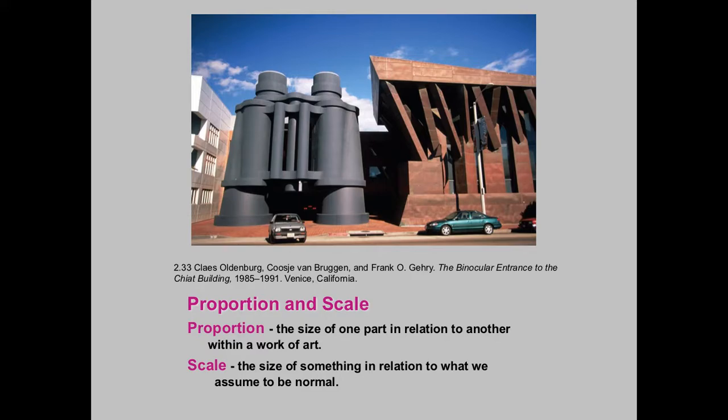So, proportion and scale. In proportion, it's the size of one part in relation to another within a work of art. If we have a sculpture of a figure that looks like a real human, we know it is proportional — the scale of the head to the body would be normal. In a bobblehead doll, the head is giant and the body is small, so that's playing around with proportion and scale.